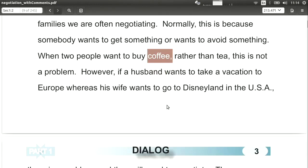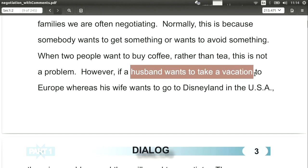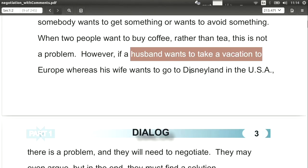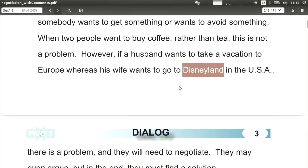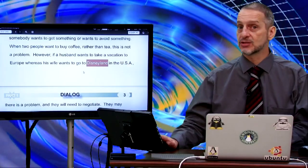Or for example, in the dialogue in this chapter, what if you have a family and the husband wants to go to vacation in Europe, but the children want to go to Disneyland or the wife wants to go to Disneyland. So that's a vacation issue. I think we often have those kinds of situations.